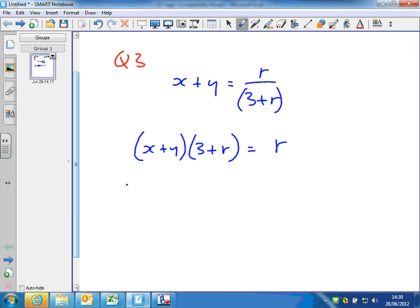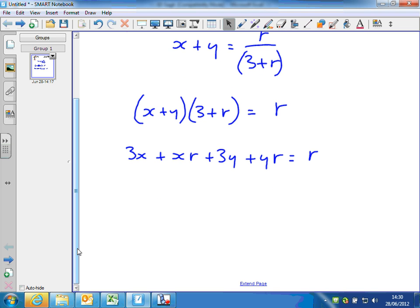So I'd get 3x plus xr plus 3y plus yr equals r. Multiplying every term in one by every term in the other. x times 3 to get 3x, x times r is xr, y times 3, and y times r.